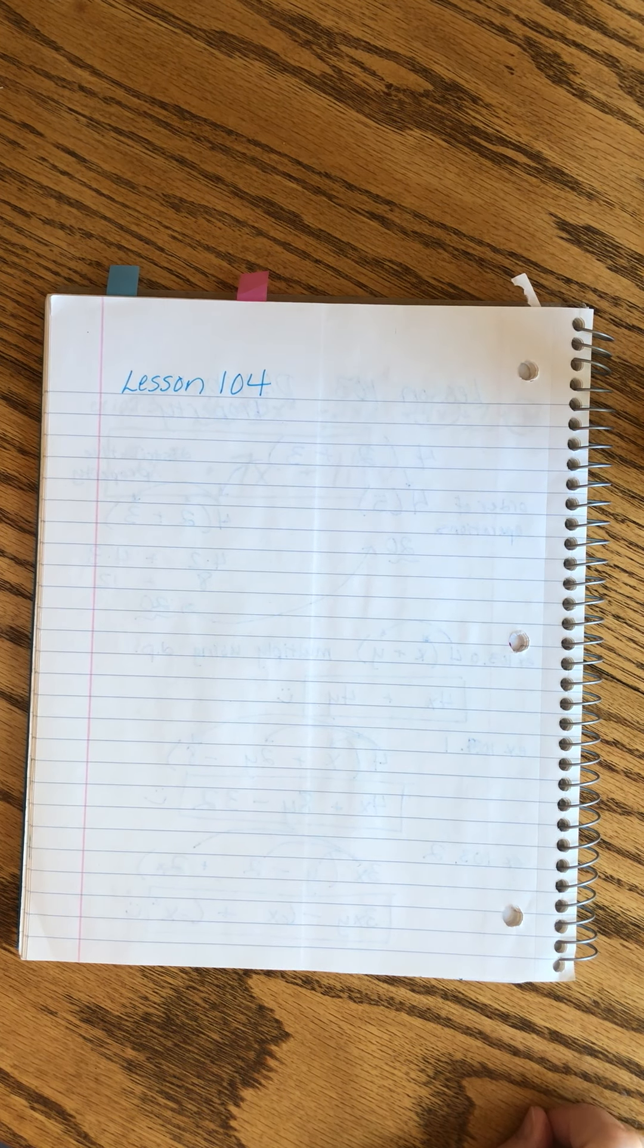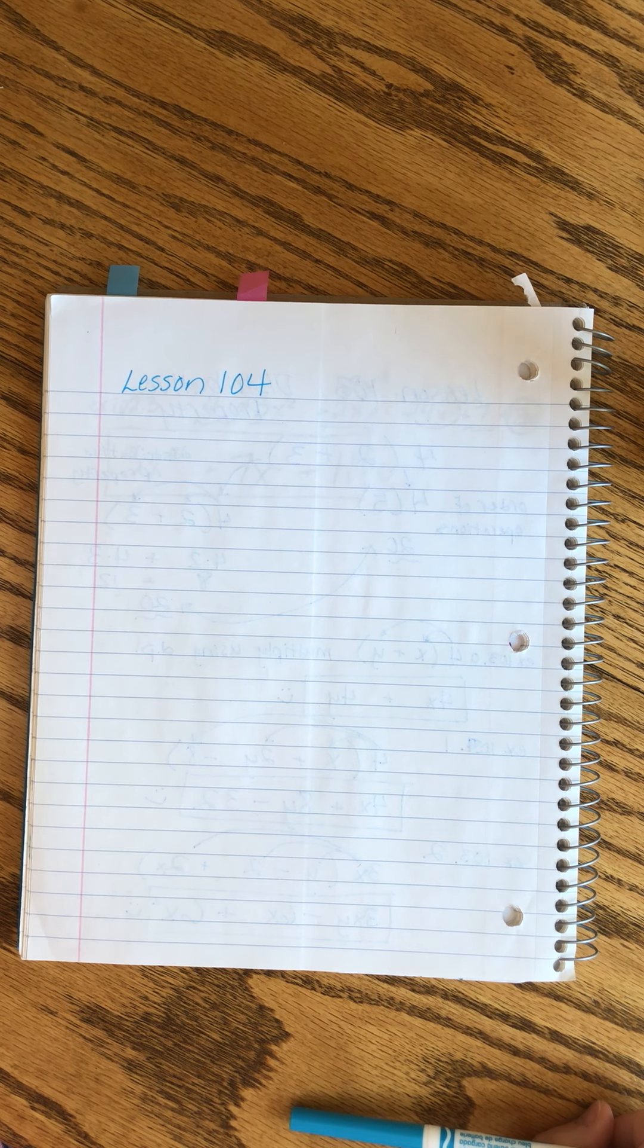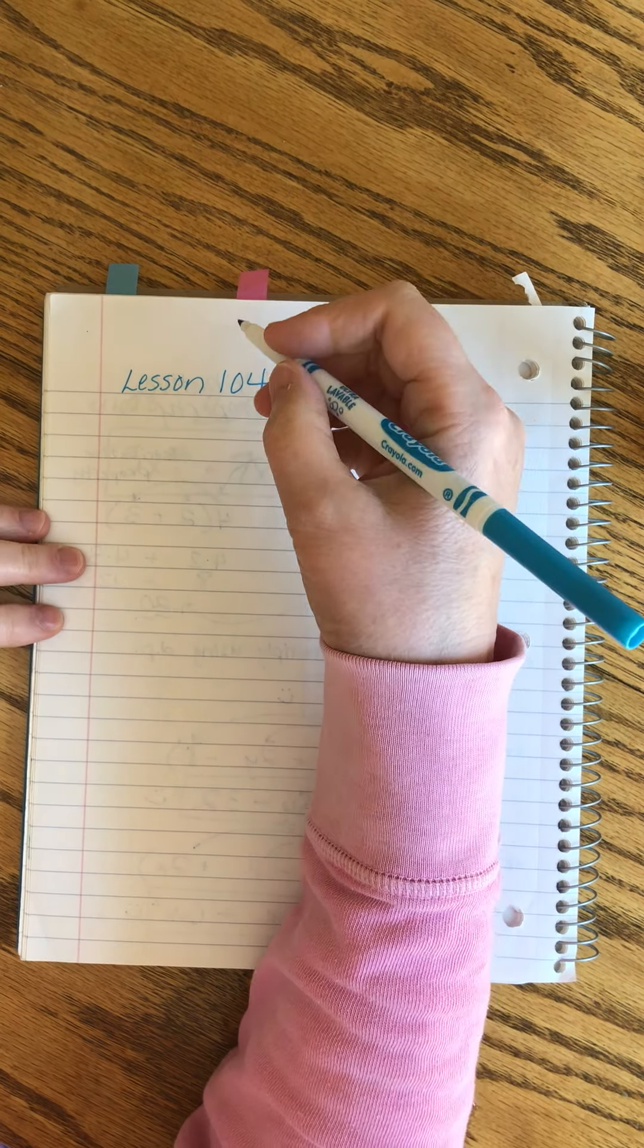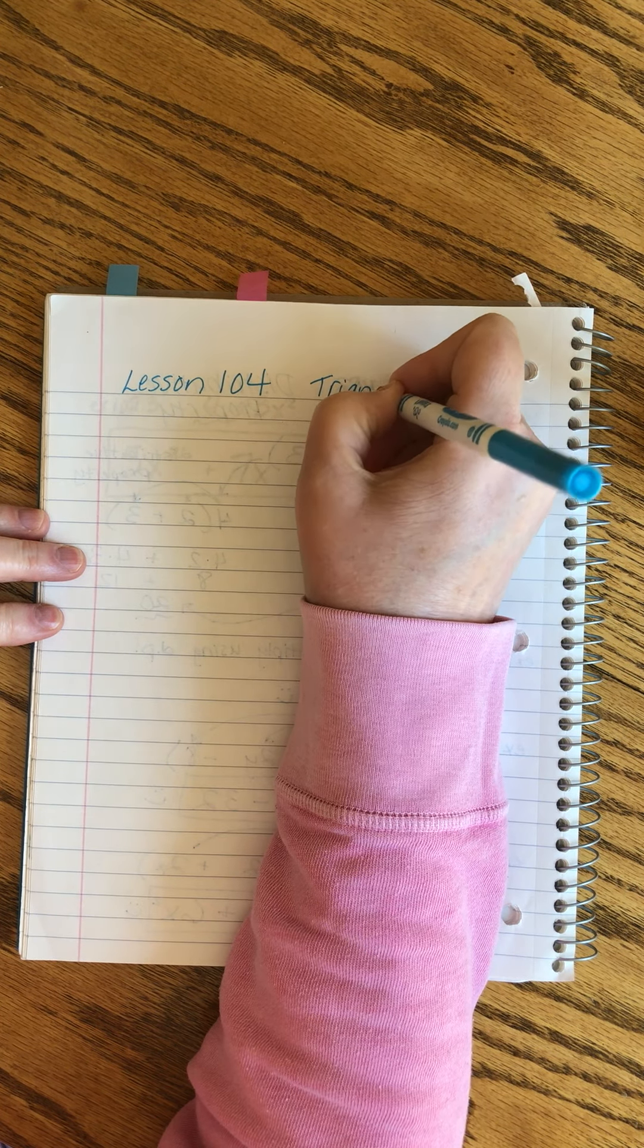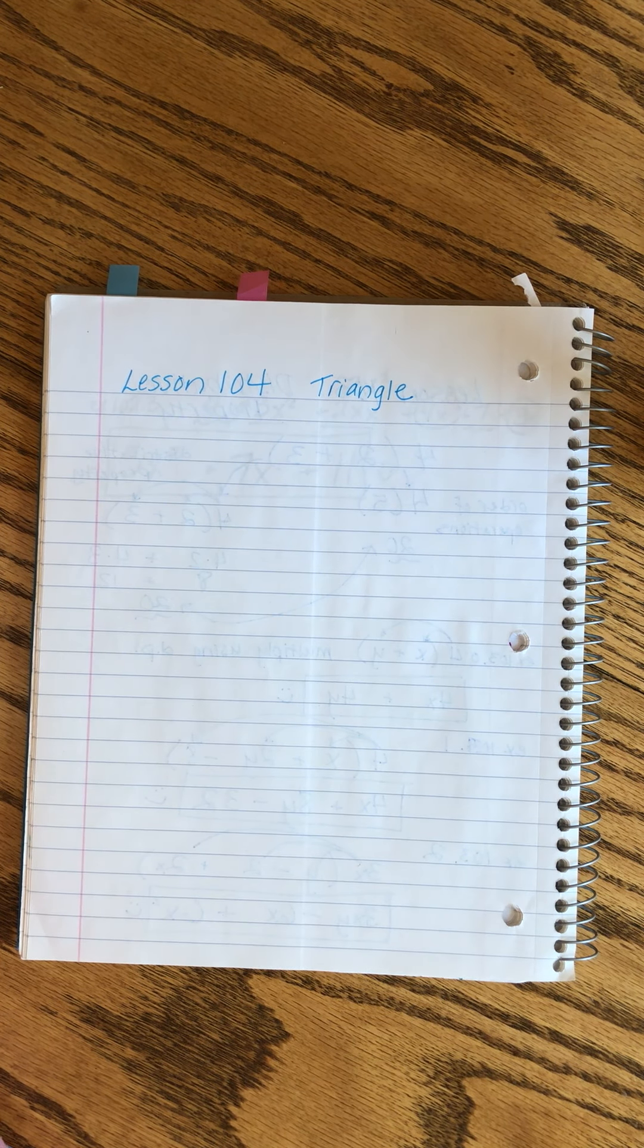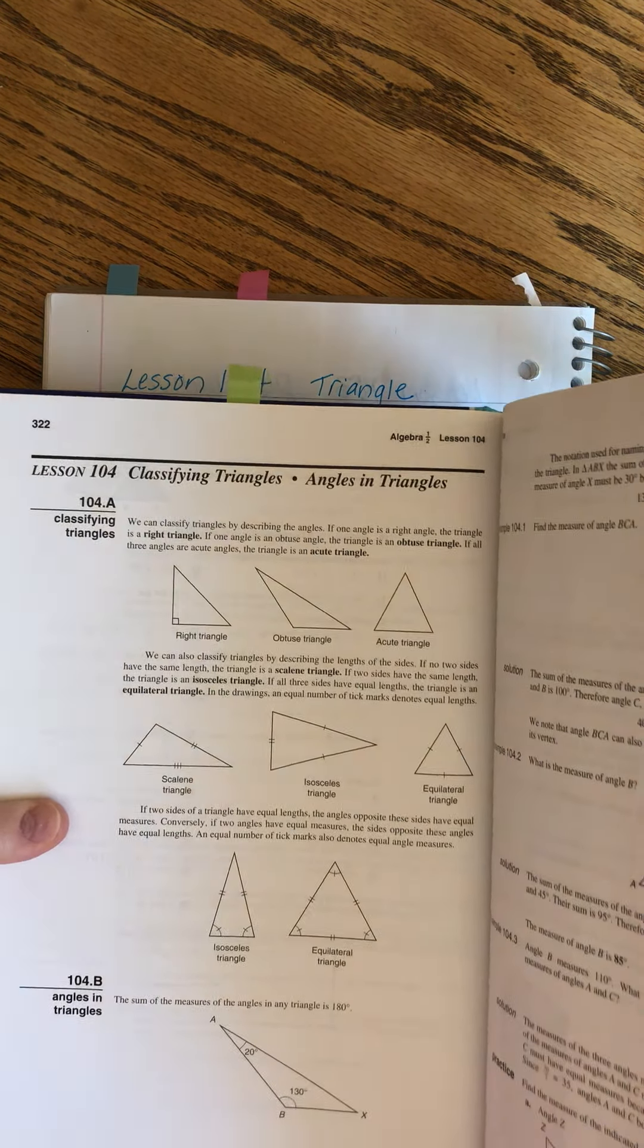Saxon Algebra 1/2, Lesson 104. We're taking a break from algebra to do a little geometry, mixing that in. We're going to talk about triangles, classifying them and talking about the angles within them.